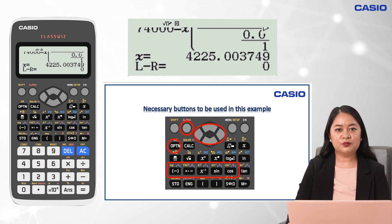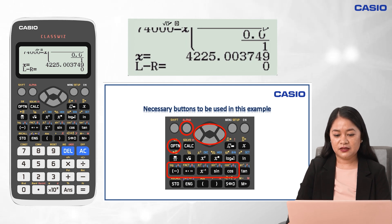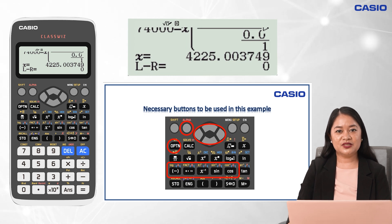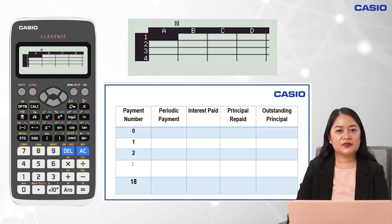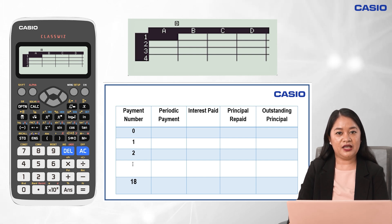Now to construct an amortization schedule, the basic buttons to be used include: Alpha, Option, negative symbol, DMS (degrees-minutes-seconds symbol), x raised to negative 1, Sine, Cosine, and the arrow keys. In constructing the table, we will use the spreadsheet menu of Casio Classways by pressing Menu and A. Since the payment is every end of the month for 1 year and 6 months, the total number of payments is 18. We will input the payment number in column A of the spreadsheet.